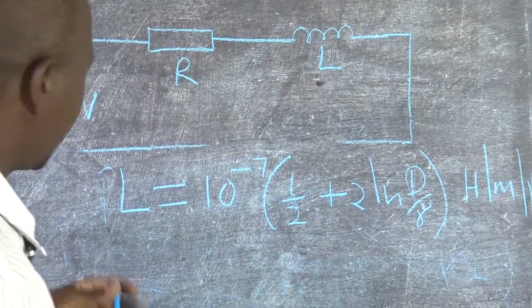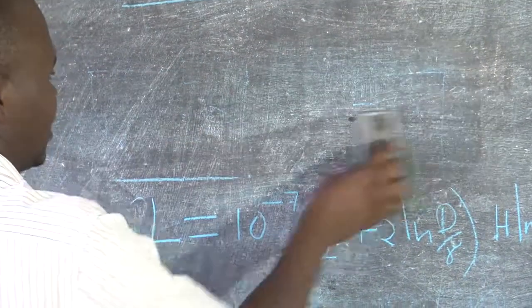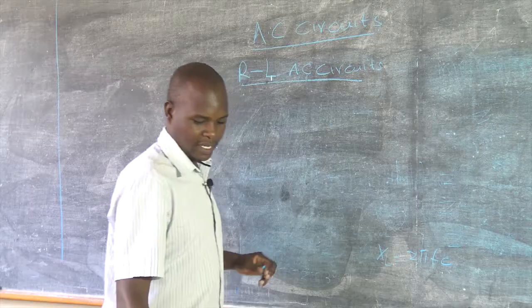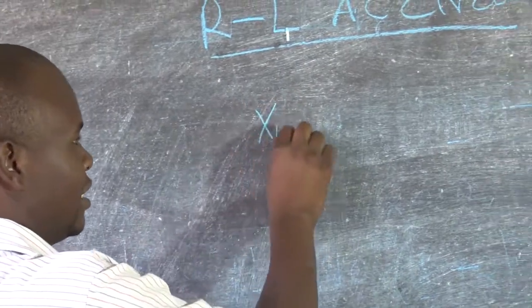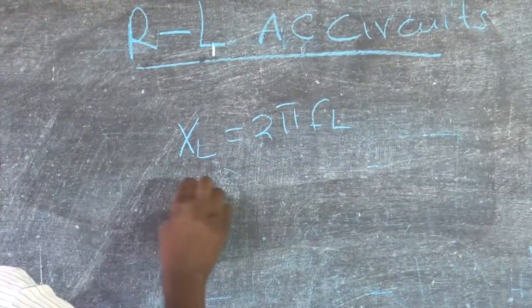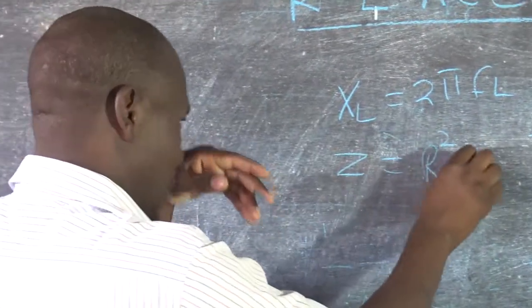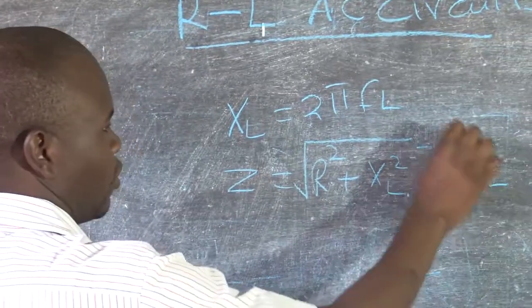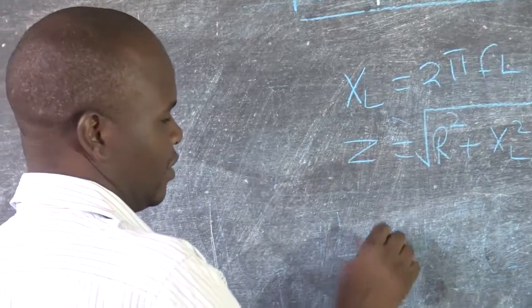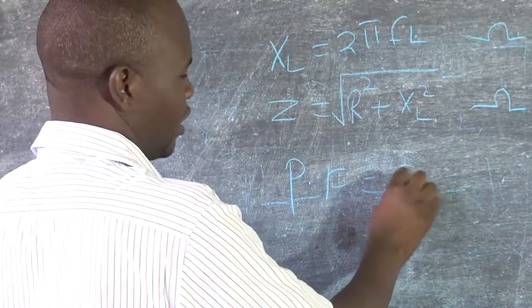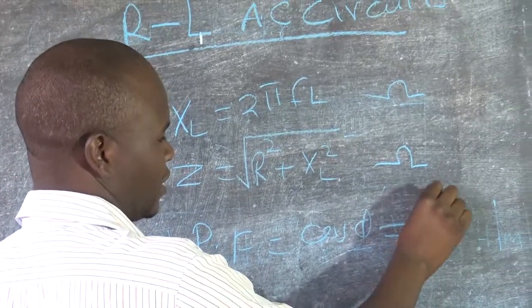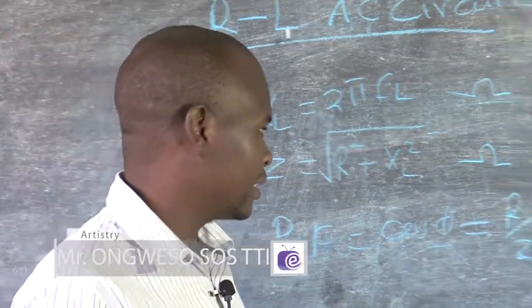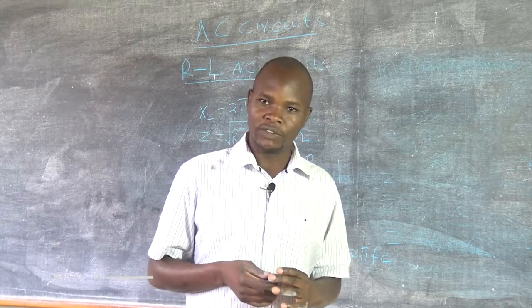So today we have discussed RL circuits and we have come up with some expressions. We have seen that XL is given by 2πfL, Z is given by √(R² + XL²) in ohms, and the power factor is given by cos θ, which is the same as R over Z. To that extent, we can stop here. Keep tuned to our channel. Thank you.